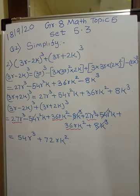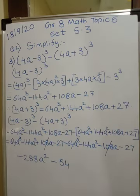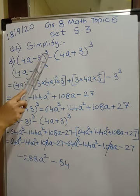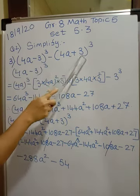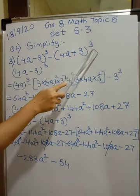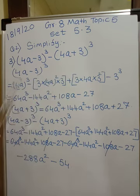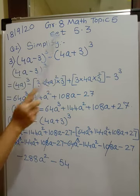Please pause the video, write neatly and be careful with the signs. Now the third problem: (4a - 3)³ - (4a + 3)³. This is (a - b)³ minus (a + b)³, where a = 4a and b = 3. Values of a and b are the same in both brackets, only the sign changes.